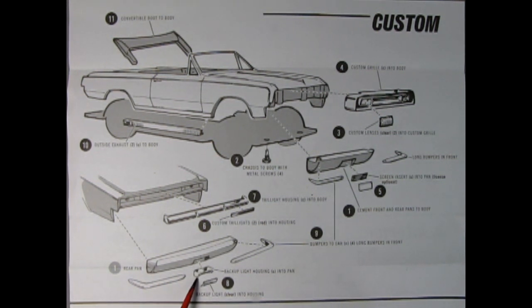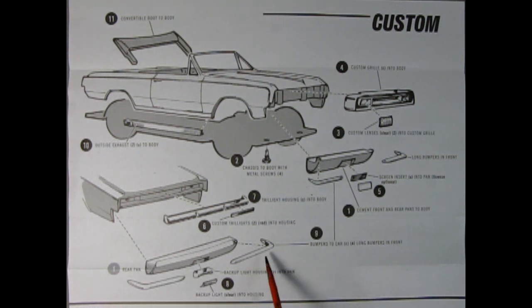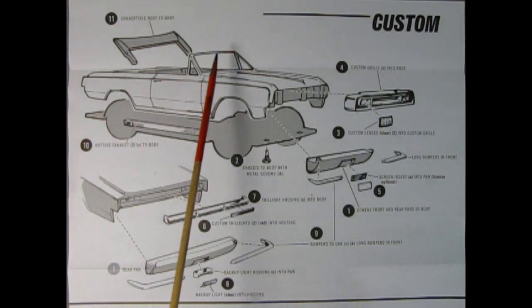Down here we have our backup light, which glues into the backup light housing, which will glue onto that rolled pan. Then next you want to add in your bumpers to the car. There are two in the back and two in the front. Then the outside exhaust will glue into place, followed by the convertible boot to the body.